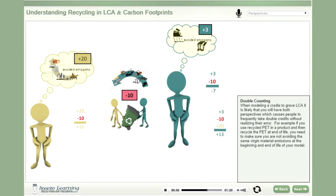The beginning-of-life participant could take the costs. He still has a net benefit of 10 if he does, but only if he gets the 20 virgin credits as well. So you can see how your perspective — whether you are recycling at end-of-life or using recycled materials at beginning-of-life — will influence how you want to model the costs and benefits of recycling.